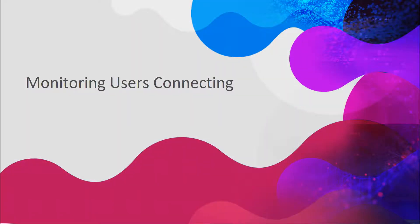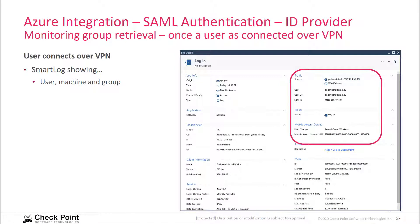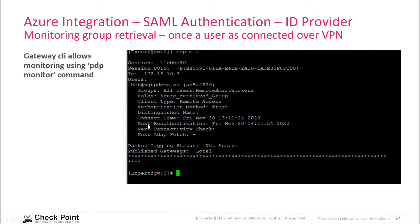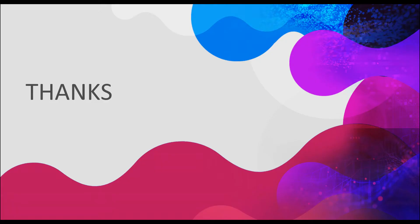If you want to monitor the user's connection, you simply go to the logs. You see there is a login event, the group that this login event is related to, and you see the computer and the user. You can see the same information using the CLI command on the security gateway itself. Thank you for watching.